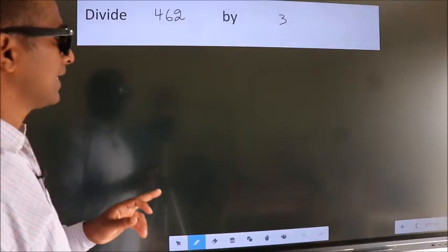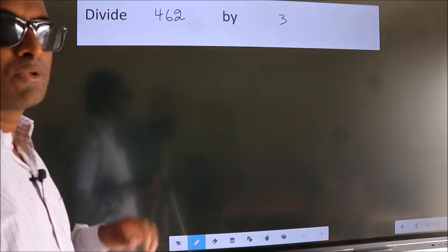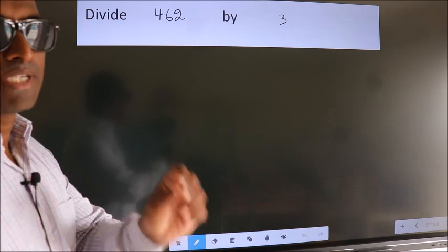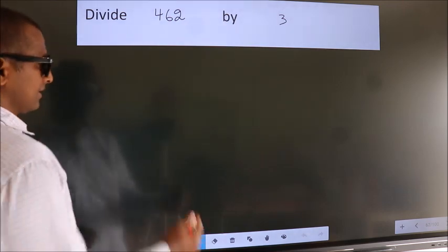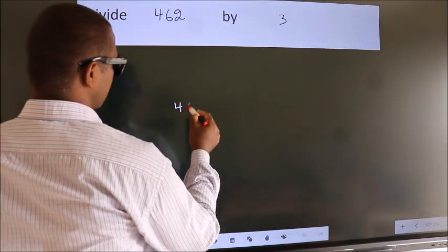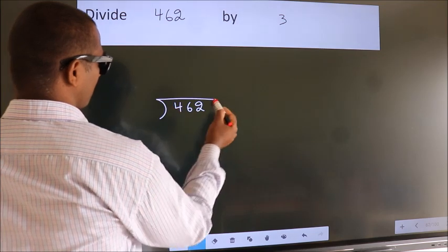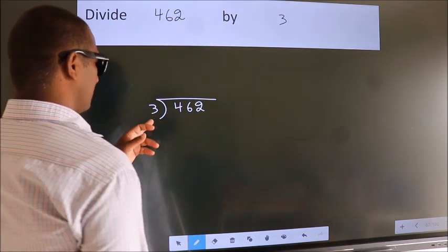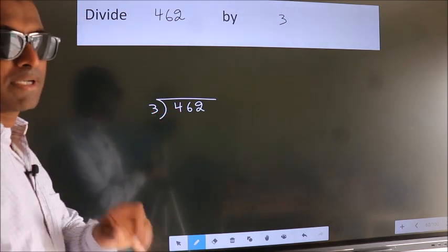Divide 462 by 3. To do this division, we should frame it in this way. 462 here, 3 here. This is your step 1.